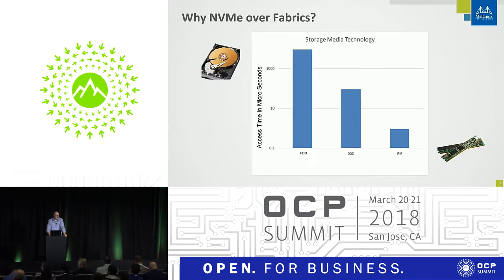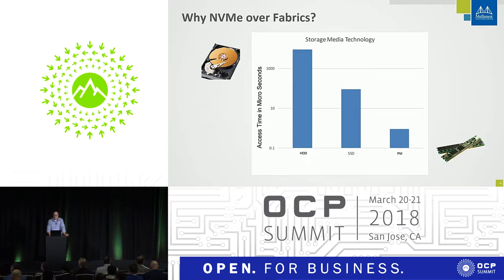So why do you need NVMe over Fabrics to do composable infrastructure? Because of the need to match remote storage performance as closely as possible to local storage, you need a very fast interconnect — because storage has been getting faster. Not just a little faster, a lot faster.